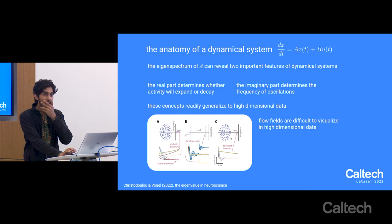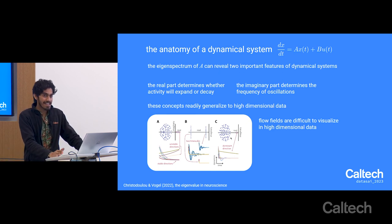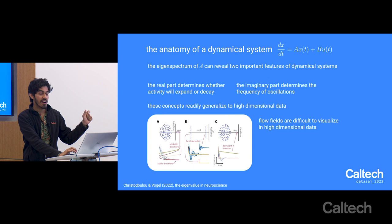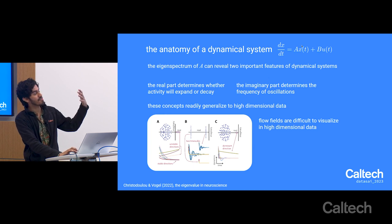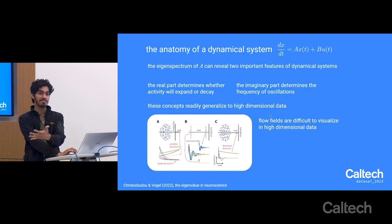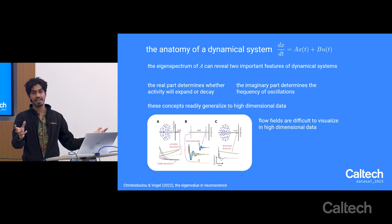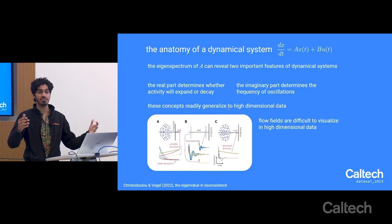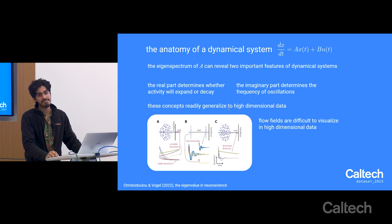Can you apply the same eigenspectrum principle to inputs? In this formulation, U doesn't contribute in the same way since the equation is linear in X. But you could think about coupled dynamical systems where the input is itself a dynamical system that feeds into another one—then they would both have their own eigenspectra. There are a lot of interesting things that happen when you have coupling between two different dynamical systems.